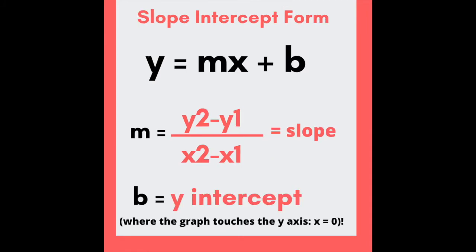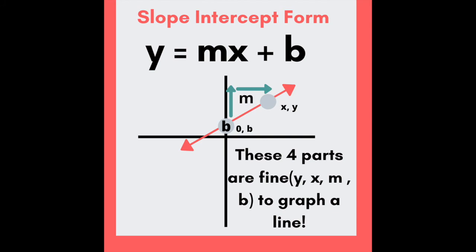Y is mx plus b. M is the slope of the line, while b is the y-intercept. Y is mx plus b. These four parts are fine to graph a line.